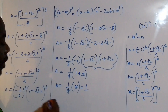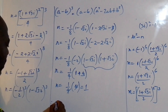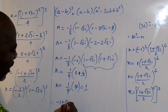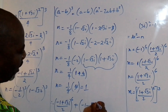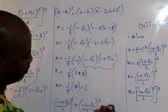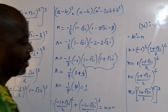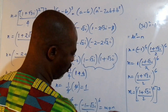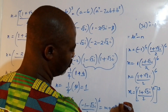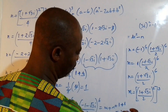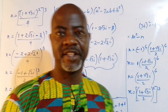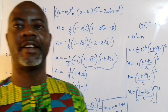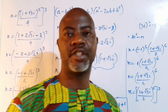Therefore we conclude that (-1 + √3i)/2 to the power of 6, plus (-1 - √3i)/2 to the power of 6, equals m + n = 1 + 1 = 2. So the final answer is 2. There you have it, guys. I will see you in my next video. Please watch, learn, subscribe, comment, and share.